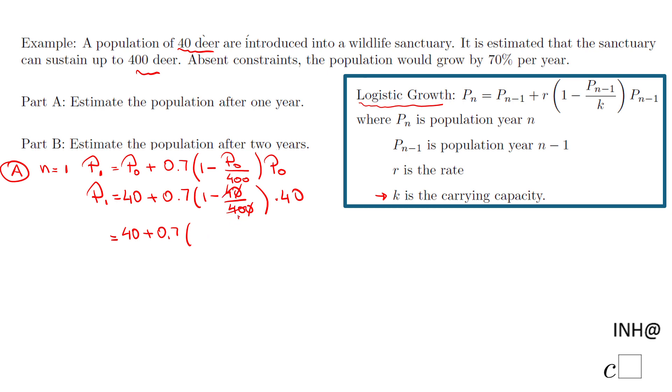These two cancel out, 4 goes into 40 ten times, so we have 1 over 10, and 1 is 10 over 10, so we have 10 over 10 minus 1 over 10, that will be 9 over 10.